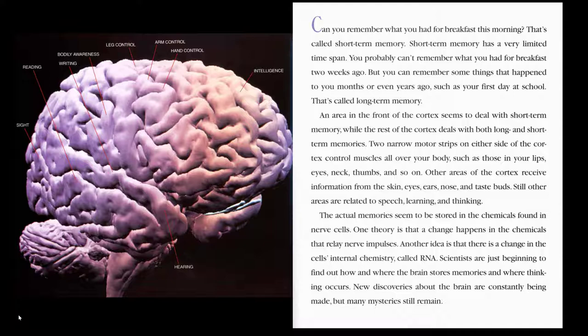The actual memories seem to be stored in the chemicals found in nerve cells. One theory is that a change happens in the chemicals that relay nerve impulses. Another idea is there is a change in the cell's internal chemistry called RNA. Scientists are just beginning to find out how and where the brain stores memories and where thinking occurs. New discoveries about the brain are constantly being made, but many mysteries still remain.